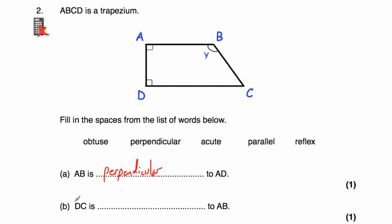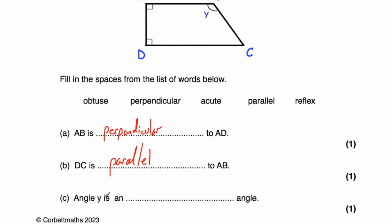Next sentence: DC is something to AB. DC and AB are the two parallel lines — remember a trapezium has one pair of parallel lines — so DC and AB are parallel. And finally part C: angle Y is a something angle. Angle Y is not acute because acute angles are less than 90 degrees. It's going to be obtuse because it's bigger than 90 degrees but less than a straight line, so angle Y is an obtuse angle.